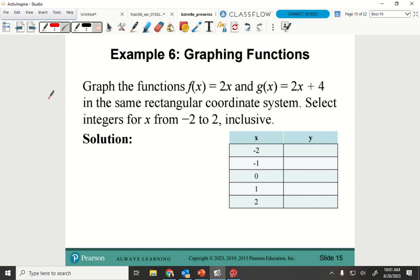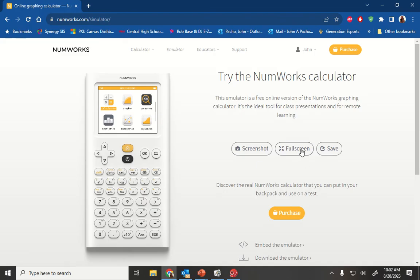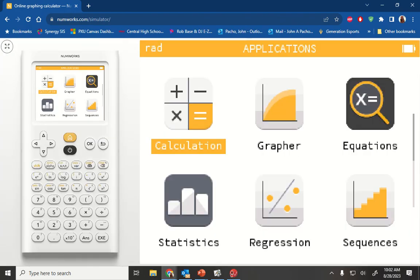Functions. Graph the function f of x is 2x, g of x is 2x plus 4, in the same rectangular coordinate system. Select integers from negative 2 to 2, inclusive. So we're going to go and do the NumWorks, and I'm going to start it from the bottom.